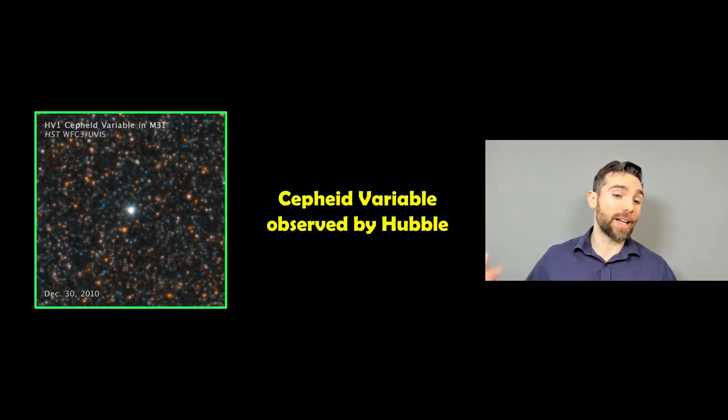And this is an animation actually taken by Hubble of one of these types of pulsating variable stars. This is actually in the Andromeda galaxy, so it's not in our own galaxy, but you can see how it's actually getting brighter and dimmer, and also slightly changing color as well. You can see a lot of the other stars around it are not doing that. So the one in the center is the pulsating star, and this is a real one actually doing that.